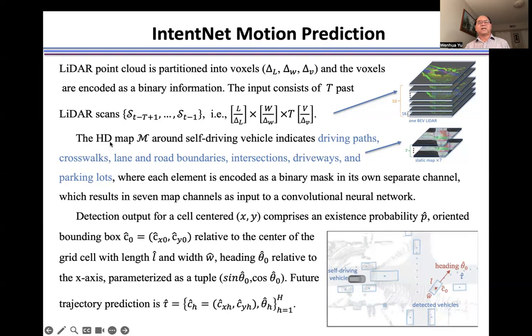Suppose we have a high-definition map M indicating the driving paths, crosswalks, lanes, road boundaries, intersections, driveways, and parking lots. We use each map layer to indicate one single feature. So we have a total of seven features in seven static map layers that form the map input.